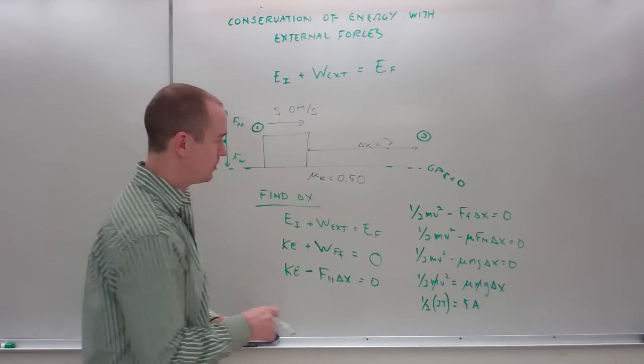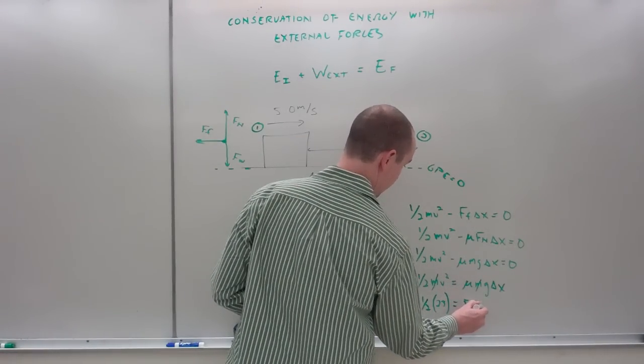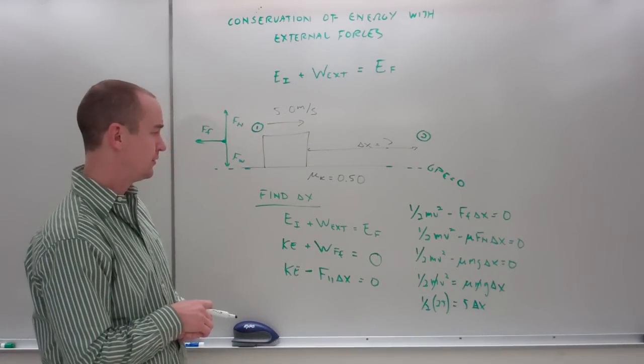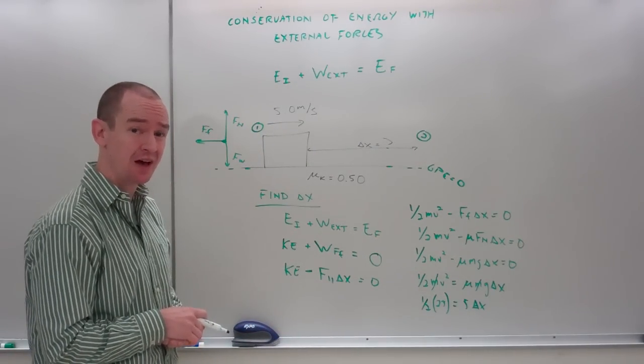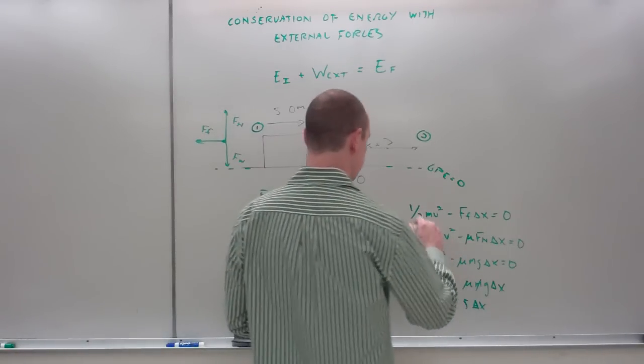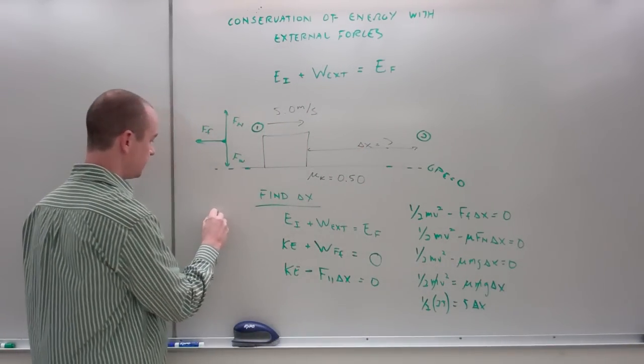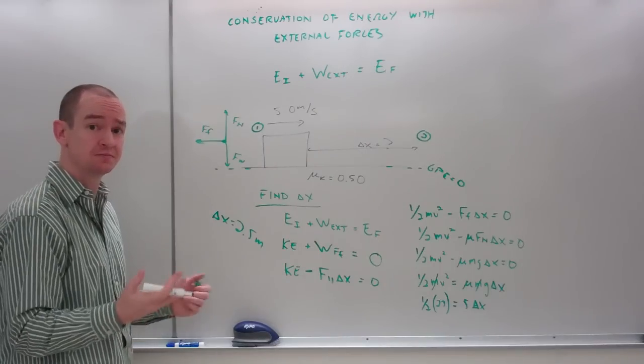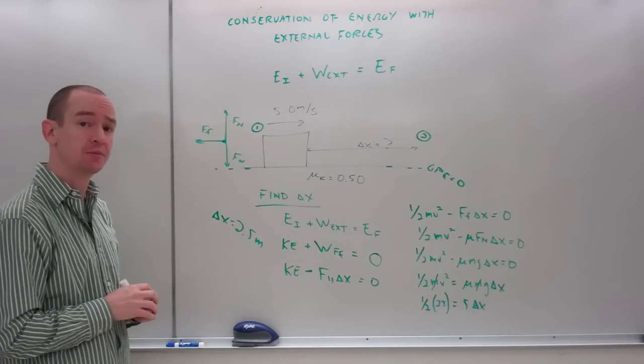All right. It looks like 25 divided by 5 is 5, half of that. My change of x is going to be 2.5 meters. All right, pretty straightforward. Let's try another problem.